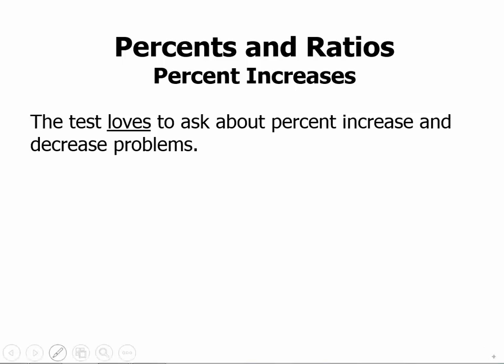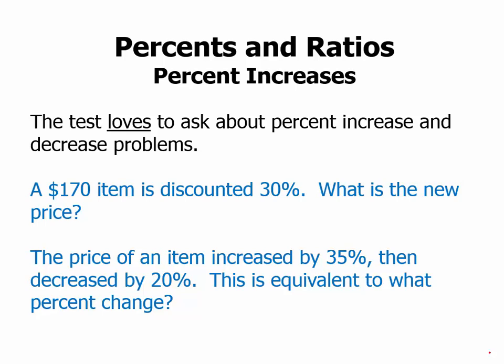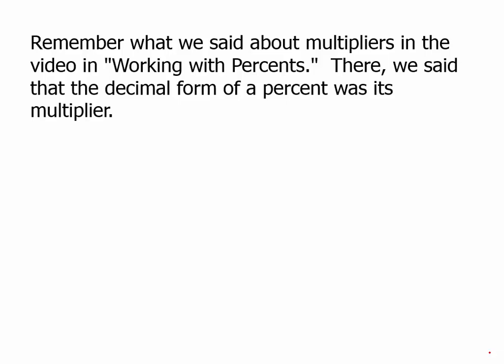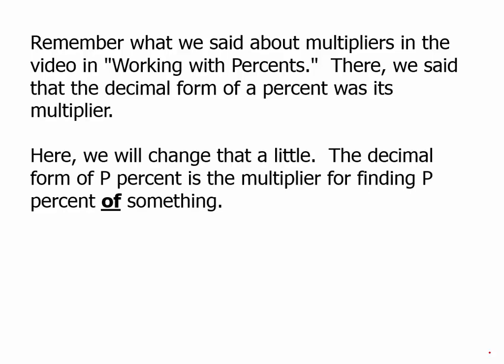We'll talk now about percent increases. The test loves to ask about percent increases and percent decreases, so here are some examples of things the test might ask. Remember what we said about multipliers in the video working with percents — the decimal form of a percent is its multiplier for finding p percent of something. So if I want to find 40 percent of something, I would use the multiplier 0.4.